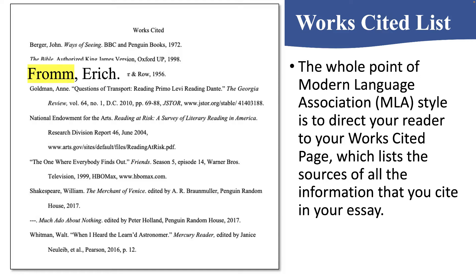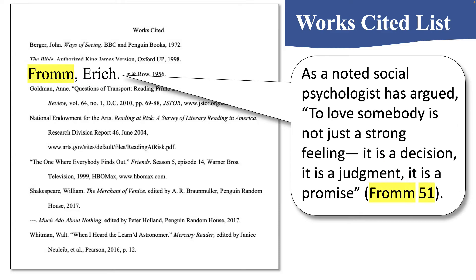All we're doing is referencing that first word. So in our essay, let's say we write something like this: 'As a noted social psychologist has argued, to love somebody is not just a strong feeling, it is a decision, it is a judgment, it is a promise.' What I've included in the parenthetical citation is the word Fromm, because that's the first word listed in the Works Cited entry — the last name of the author. I've also included the number 51, because I'm quoting from page 51. Notice there's just a space and then the number — no comma, no p. or pg.